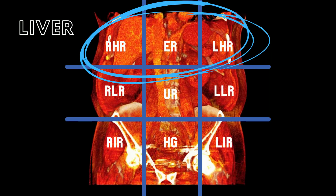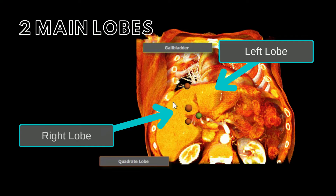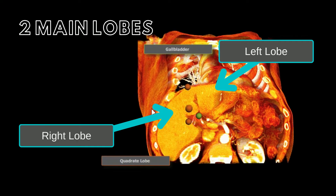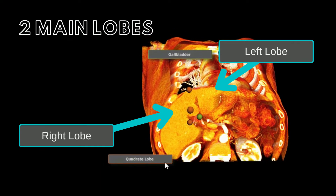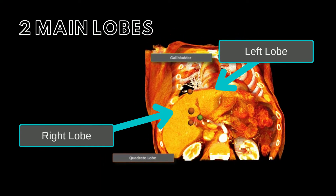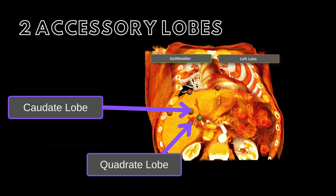The liver occupies three regions — the right hypochondriac, epigastric, and left hypochondriac abdominal regions, which are highlighted here. The liver is located right below the diaphragm and composed of four lobes, with two main lobes and two accessory lobes. The main two lobes are the right and left lobes, which are separated by the falciform ligament. The accessory lobes are the quadrate and caudate lobes.